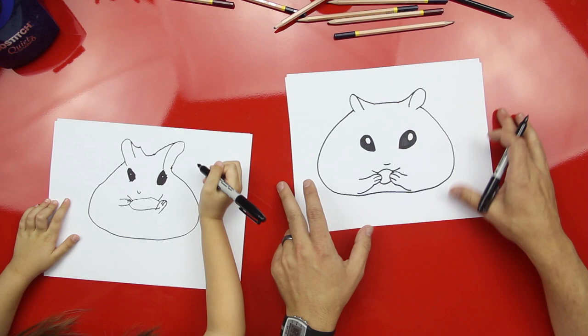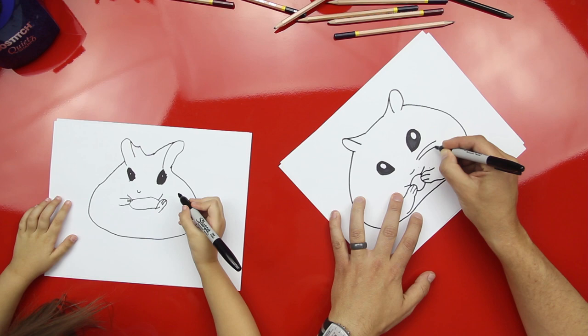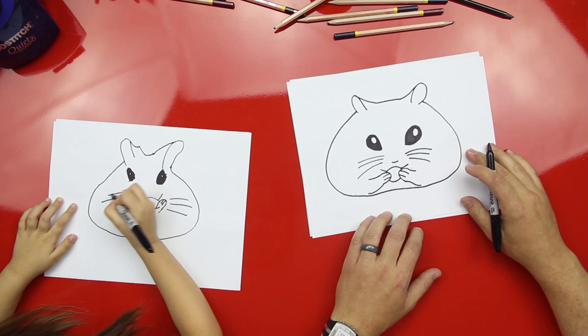We're missing some whiskers. Let's do the whiskers really quick. One, two, three. One, two, three. Okay. Should we do his feet?